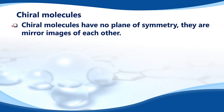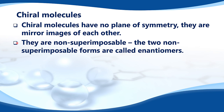Chiral molecules have no plane of symmetry. They are mirror images of each other and they are non-superimposable. The two non-superimposable forms are called enantiomers.